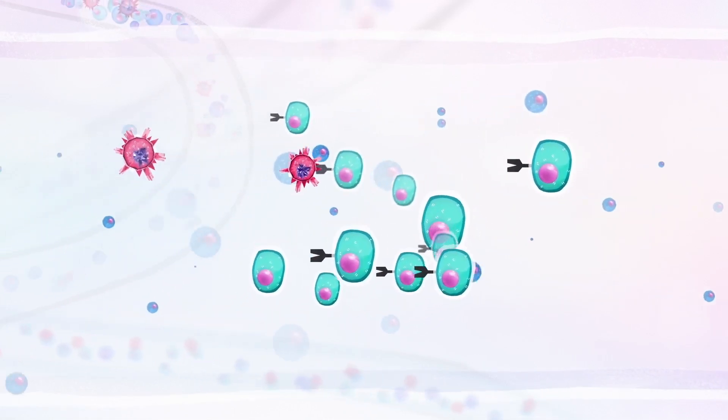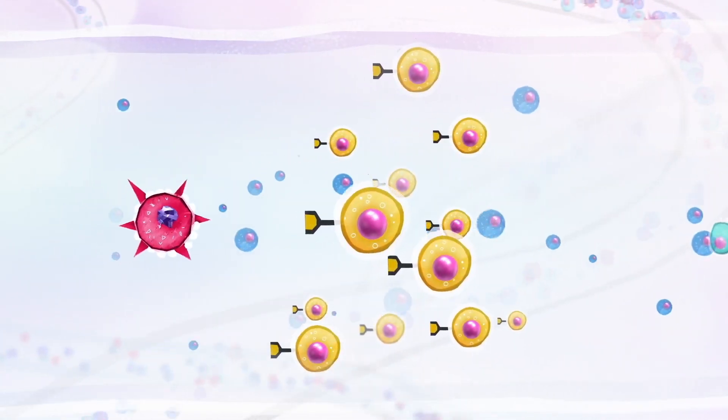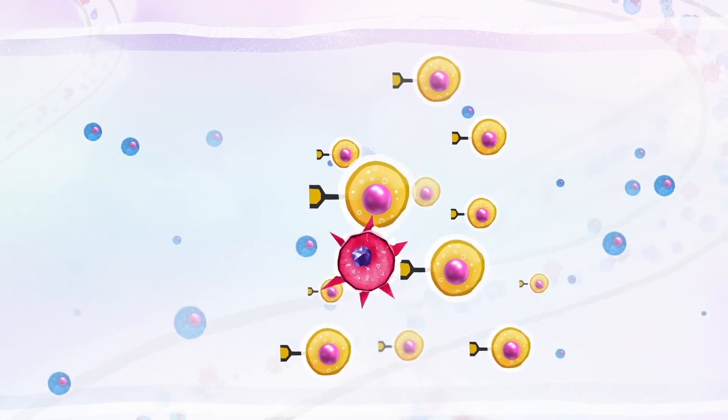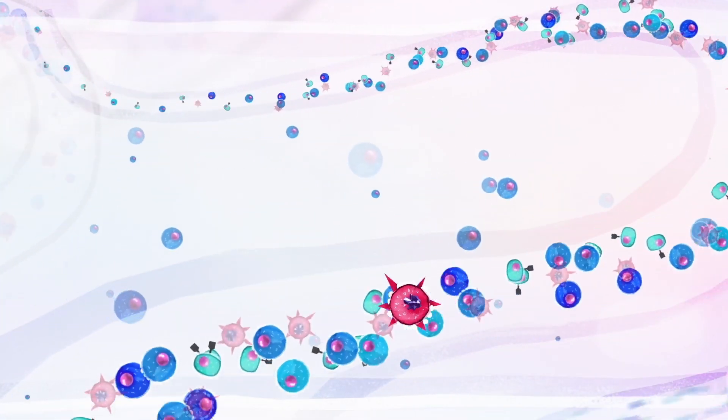The immune system defense works pretty well, but certain cancer cells are sometimes able to escape from its surveillance. Consequently, this allows the cancer to further develop.